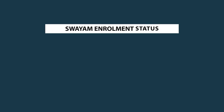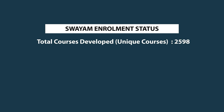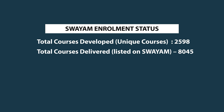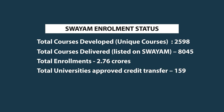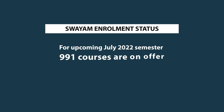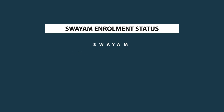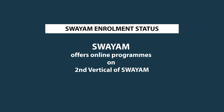As on date, total unique courses developed on SWAYAM are around 2,598. Total courses listed on the SWAYAM platform are more than 8,000. Total enrollment since the beginning is 2.76 crores. Total universities approved for credit transfer is 159. Total certificates issued till date is 11.66 lakhs. In the July session, more than 900 courses are being offered on the SWAYAM platform, which is also being used for offering complete online programs — known as the second vertical of SWAYAM.